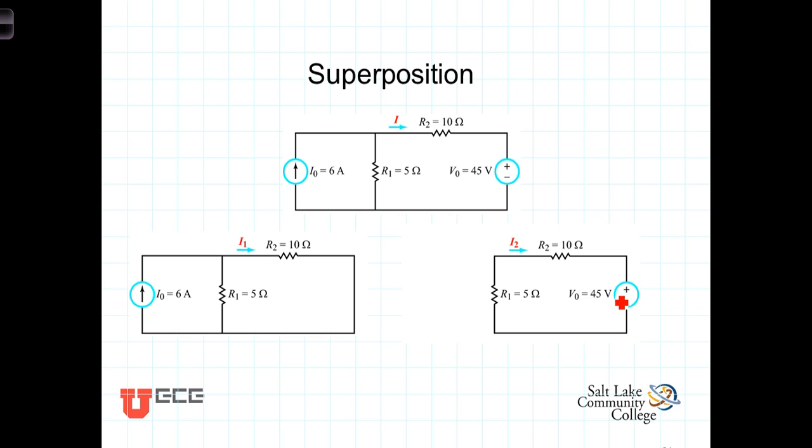How do we then separate or turn off one source and then the other? Well, sometimes this turning off is referred to as deactivating the source or turning the source to zero. In this first circuit here, we have just the current source. The voltage source has been turned to zero, which means that we've got a voltage source here of zero volts. So from this side of the circuit, this side of the source, to this side of the source, we increase zero volts.